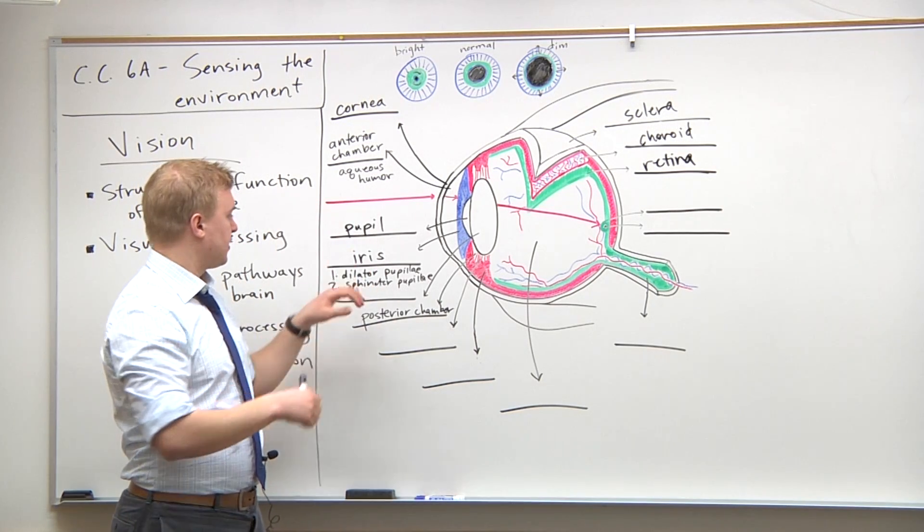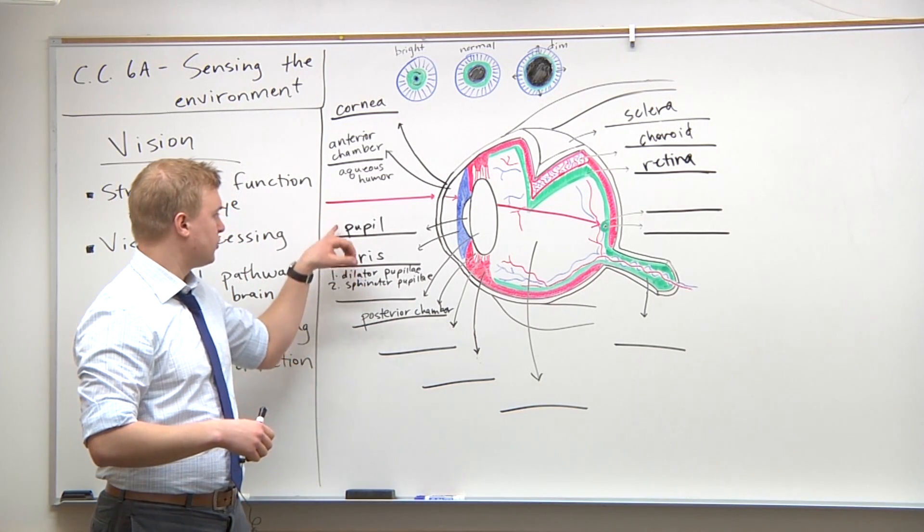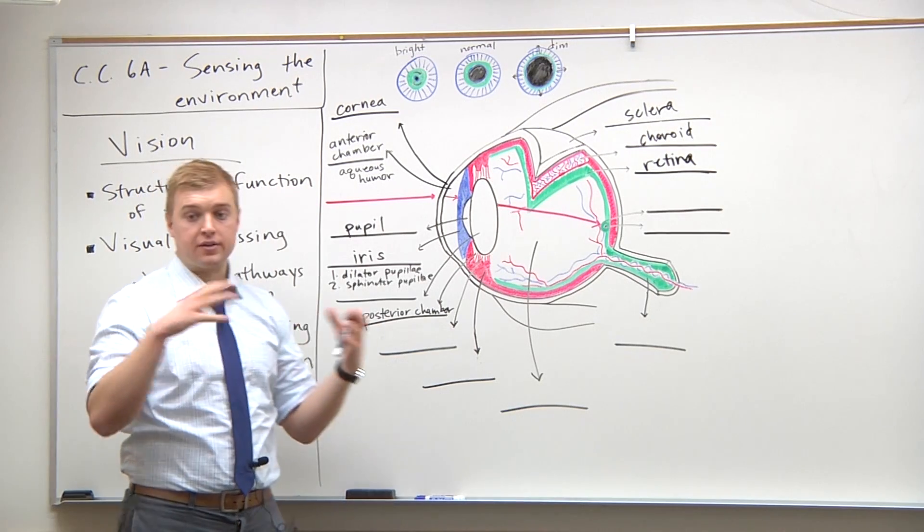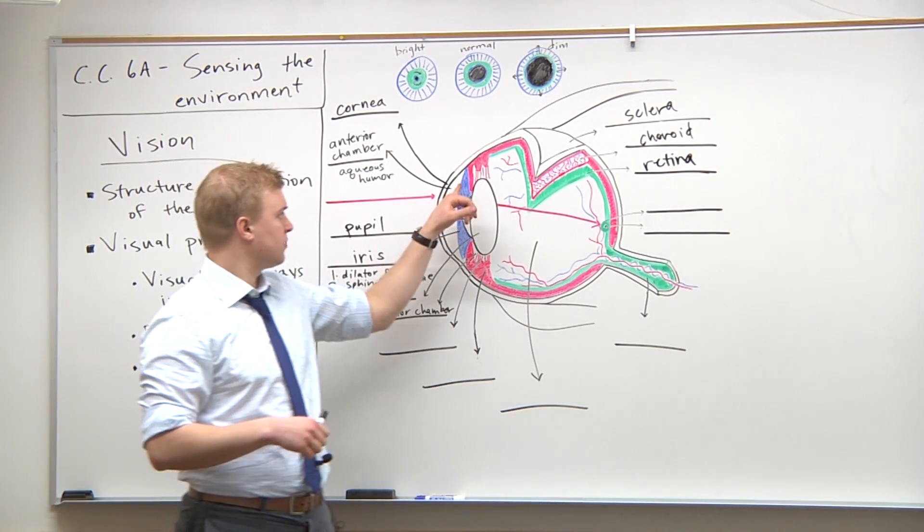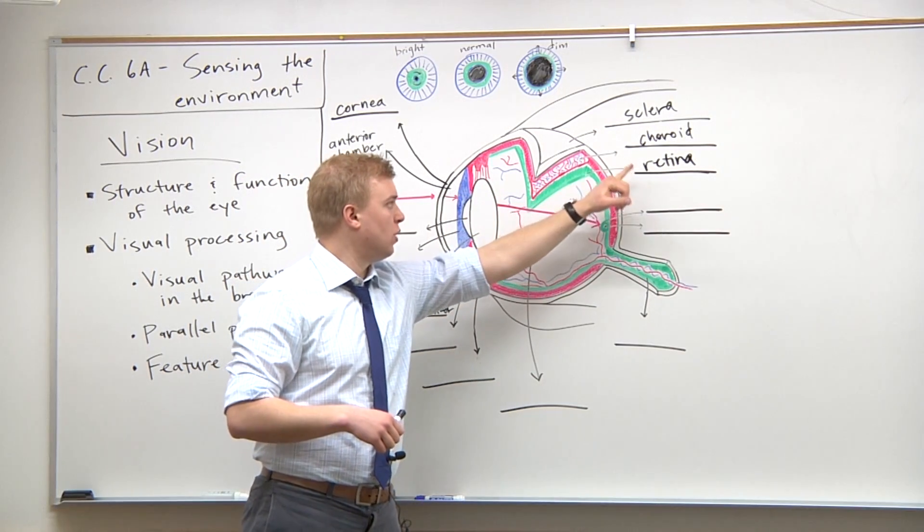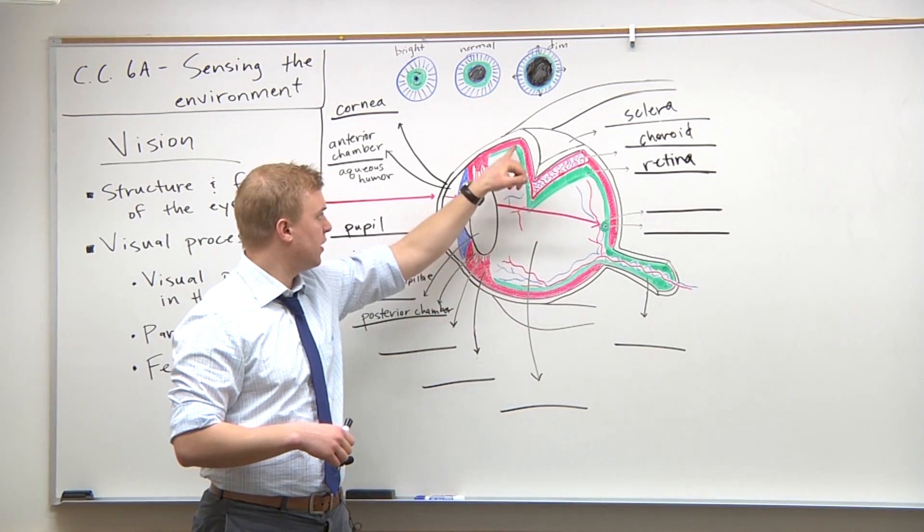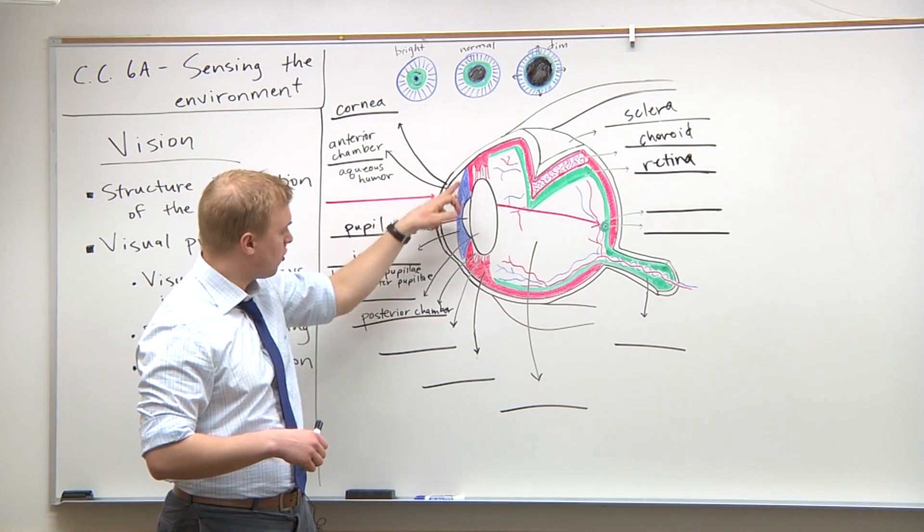These two parts of the iris allow the pupil to either dilate or constrict. Also note that the iris is continuous with the choroid. The second layer is continuous throughout.